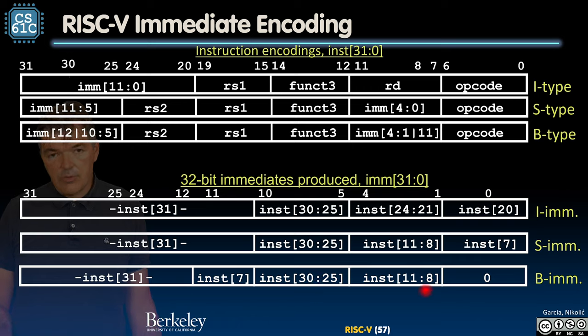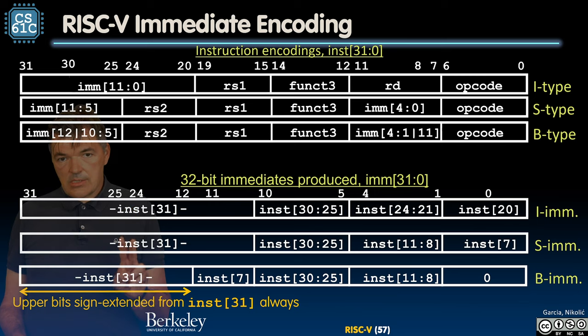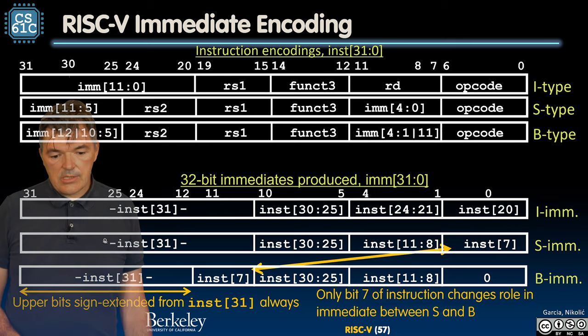Instruction bits 30 to 25 are in the same position. Instruction bits 11 to 8 are in the same position. We just move the instruction bit 7 to a different position. So it's again one single bit two way multiplexer. And we always sign extend based on the most significant bit.